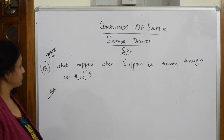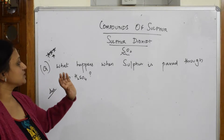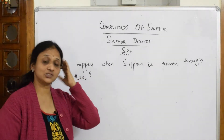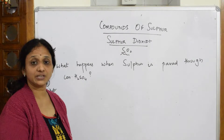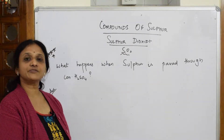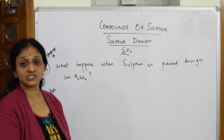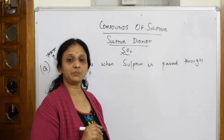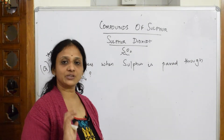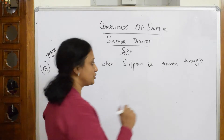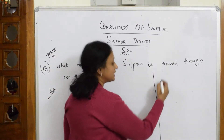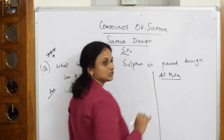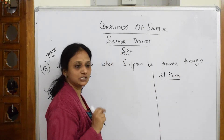The key question is: what happens when sulphur is passed through concentrated sulphuric acid? The concept here is that concentrated sulphuric acid is a very strong oxidizing agent. Remember, in the exam, when sulphuric acid is given, there are two things to keep in mind depending on whether it is dilute or concentrated.